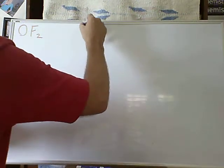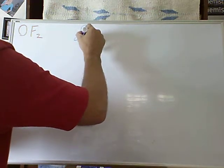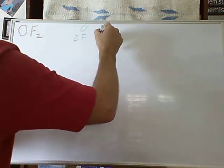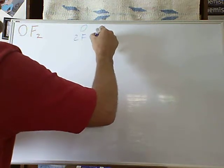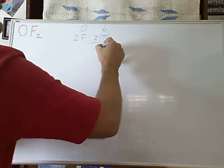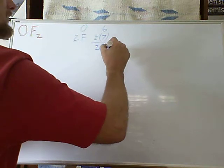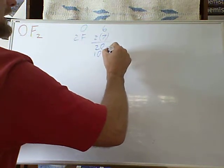To do the Lewis structure of OF2, oxygen difluoride, we count the electrons, the valence electrons. We have 6 for oxygen, 7 for each of the fluorines, gives us 20 electrons total, or 10 electron pairs.